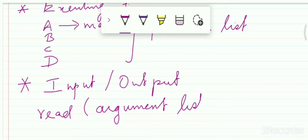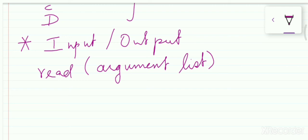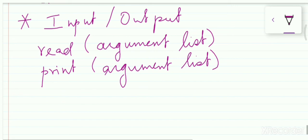Similarly, for the output, to show the output we have the print keyword - print argument list. We don't have a format statement here. Please remember we don't have a format statement here.